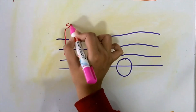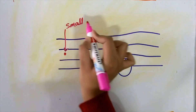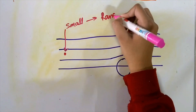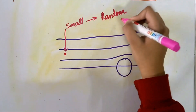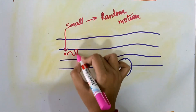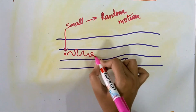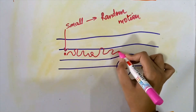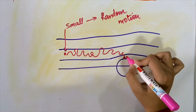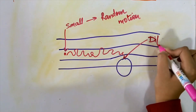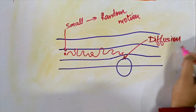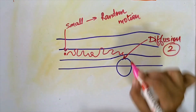Now, if your particle is small — very small — it will have random motion irrespective of the streamline. Because of this random motion, it may come in contact with the fiber and get captured. This is the mechanism of diffusion.